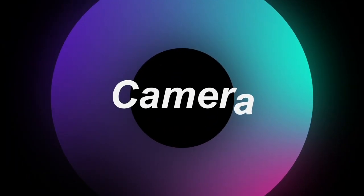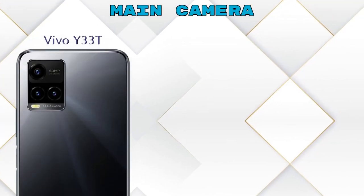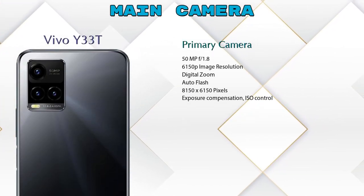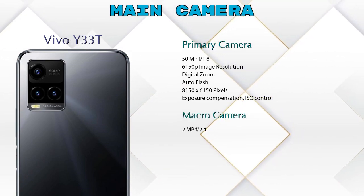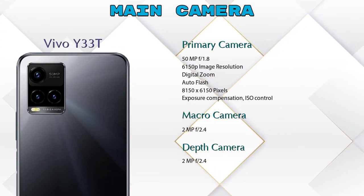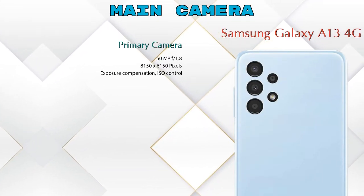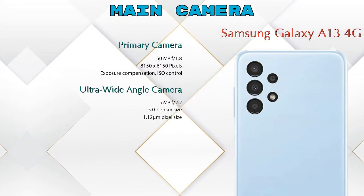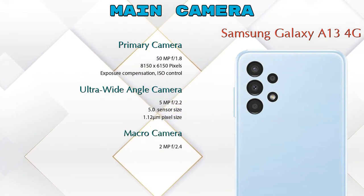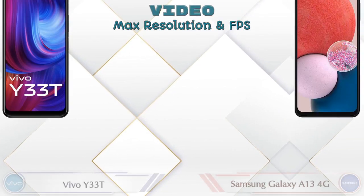Let's talk about our favorite feature: the camera. First, talking about the rear camera. The Y33T has three cameras: a primary camera, a macro camera, and a depth camera. The Galaxy A13 4G has four cameras: a primary camera, an ultra-wide angle camera, a macro camera, and a depth camera.